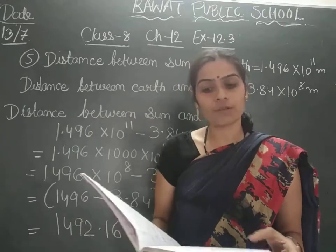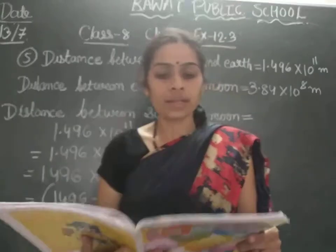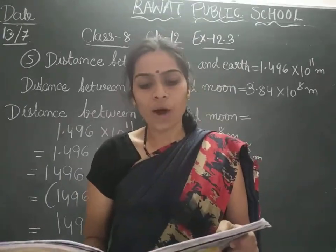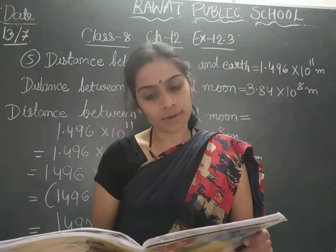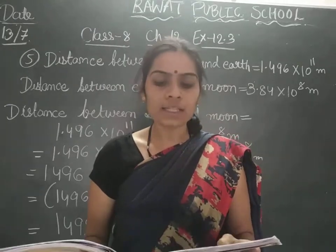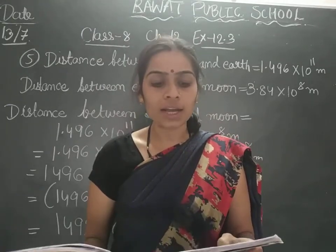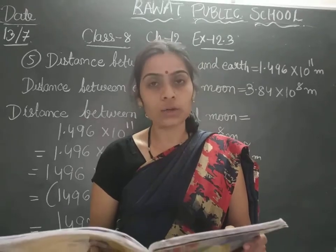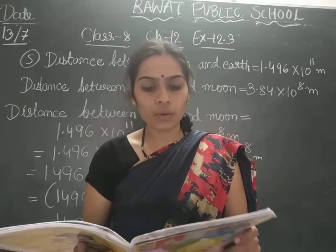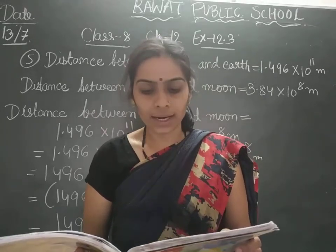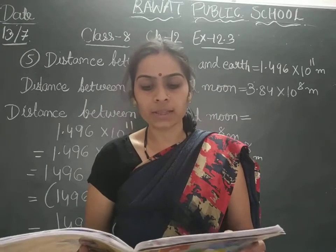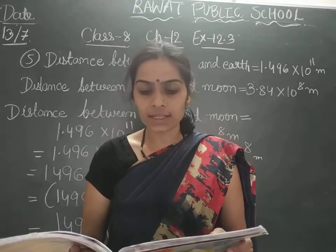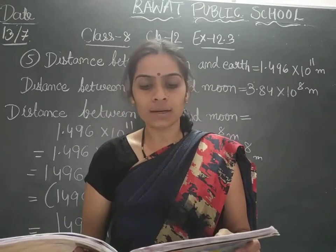Let me read the question for you. The distance between the sun and the earth is 1.496 into 10 raised to 11 meters, and the distance between the earth and the moon is 3.84 into 10 raised to 8 meters. During solar eclipse, the moon comes in between the sun and the earth. At that time, what is the distance between the moon and the sun?